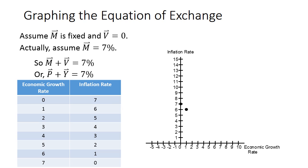What if the economy grows at a rate of 3%? Then inflation has to be 4%. We can keep doing this, adding points to our graph, until we get all the way up to an economic growth rate of 7%.